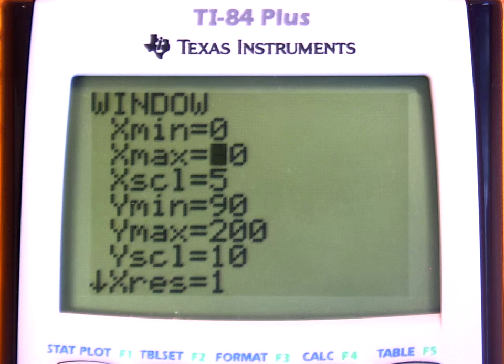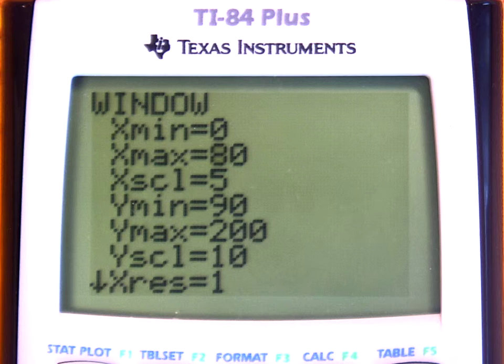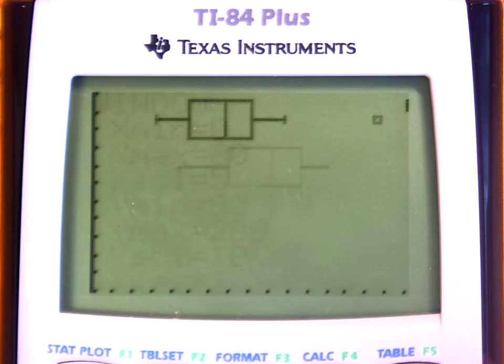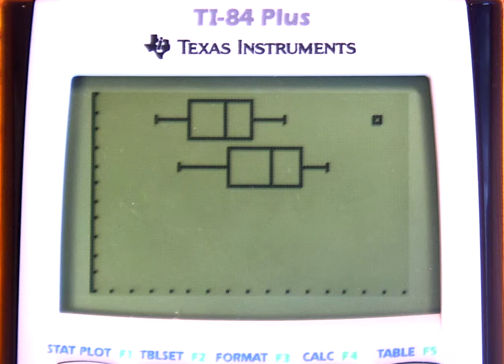The scale, the y min, the y max, none of that would really be important unless we were doing a histogram. So this is good enough. Now if you press the graph button, you should be able to see the two box and whisker plots simultaneously, which is really convenient.